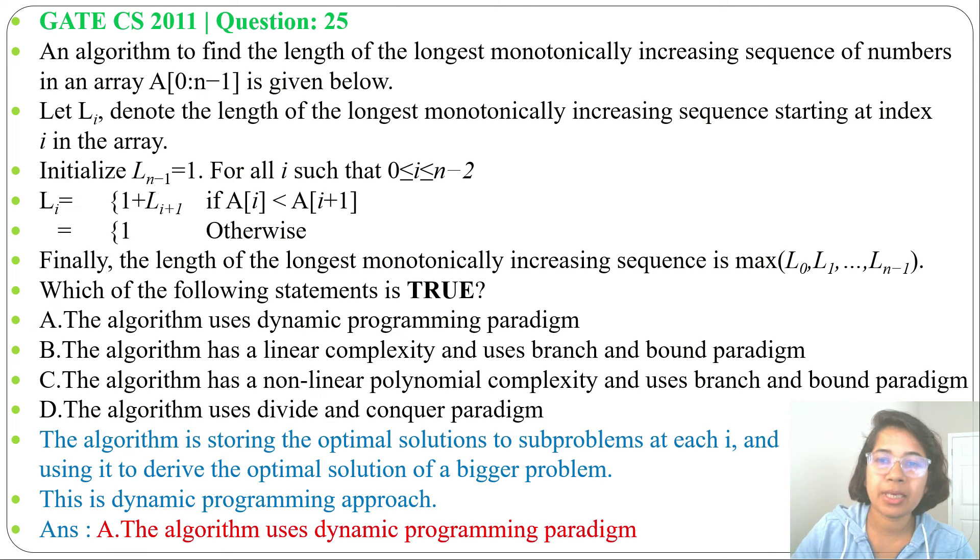In dynamic programming we check all possibilities and we pick the best. So in that example I found all L values and from that maximum is the longest monotonically increasing sequence length.